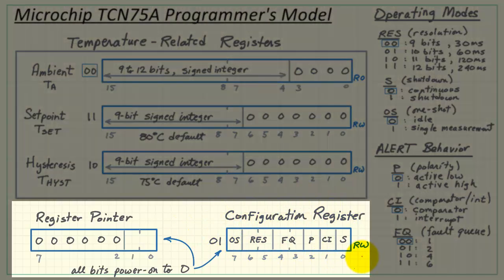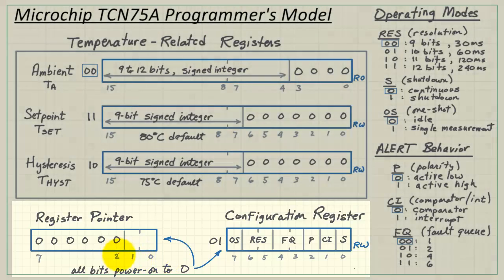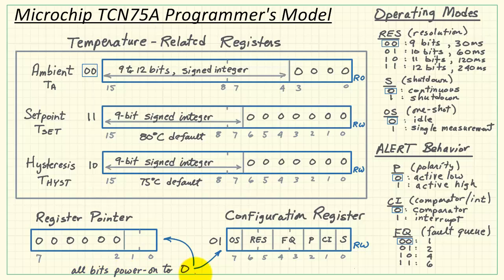We have an 8-bit configuration register, and an 8-bit register pointer. Note that all of the bits in the registers power on to zero, and that means we would have zeros right here. That means the register pointer initially is pointing at the ambient temperature register. This is where we get our measurement result. We have anywhere from 9 to 12 bits, and that depends on the resolution setting in the configuration register. By default, these bits are zero, and that selects the 9-bit resolution mode with a 30 millisecond conversion time.